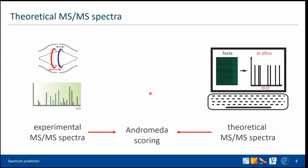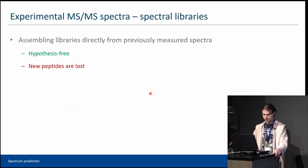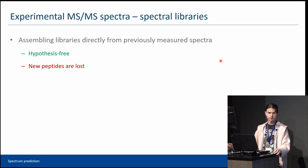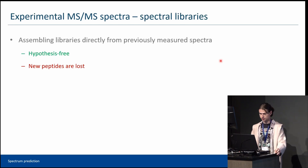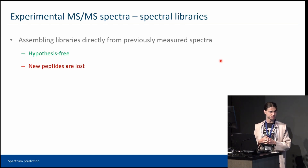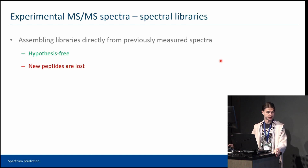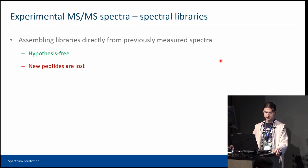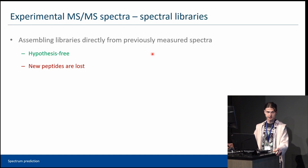However, intensity is available information and we don't want to just lose it. One way to utilize it is to assemble libraries from previously measured spectra and use them in subsequent research. The advantage of this approach is that we don't make any assumptions about the peaks based on a reference proteome — we just use the peaks themselves. So this approach is hypothesis-free.